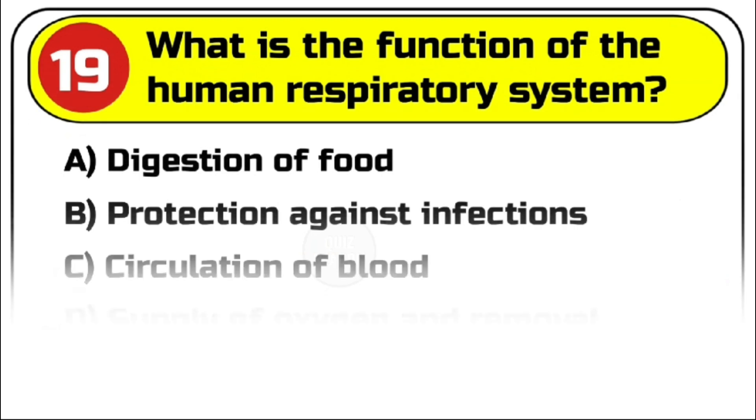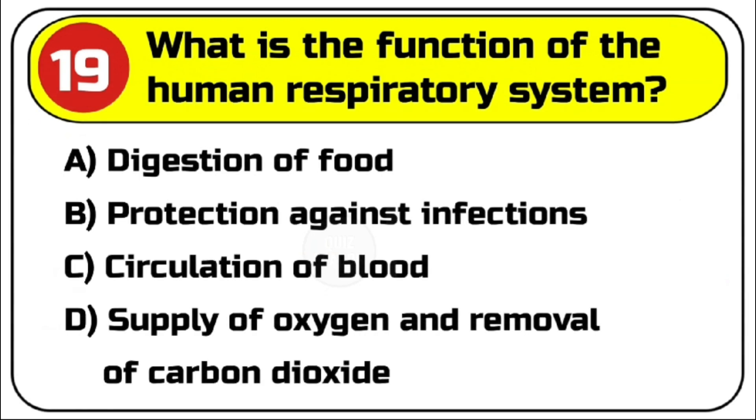Question number 19. What is the function of the human respiratory system? Options are A. Digestion of food. B. Protection against infections. C. Circulation of blood. D. Supply of oxygen and removal of carbon dioxide.